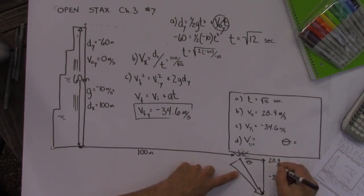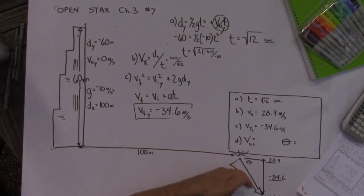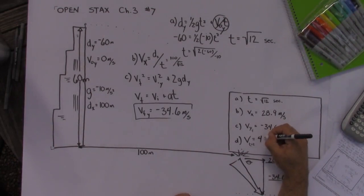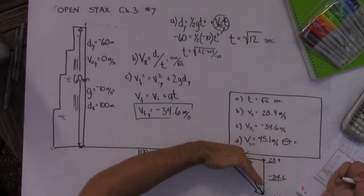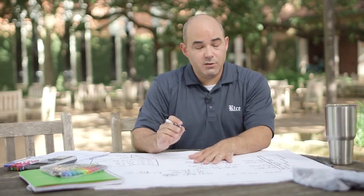We need to find that hypotenuse using the Pythagorean theorem and this angle right here using SOHCAHTOA. So I plugged that into my calculator. I know the x component and the y component it turns out that the total velocity is 45.1 meters per second. And this angle as measured below the horizontal comes out to be pretty close to 50 degrees. There you go. That's how you do chapter three number seven for OpenStax. I'll see you in the next one.